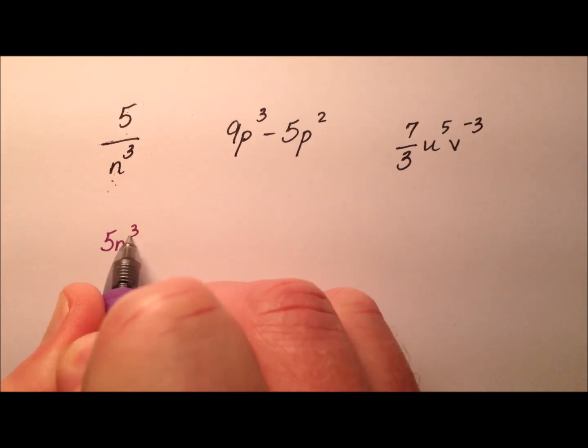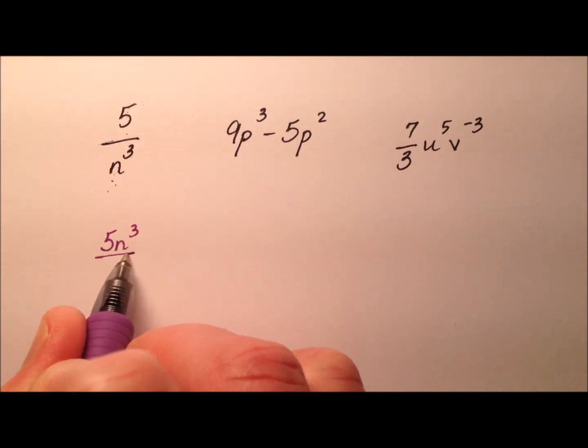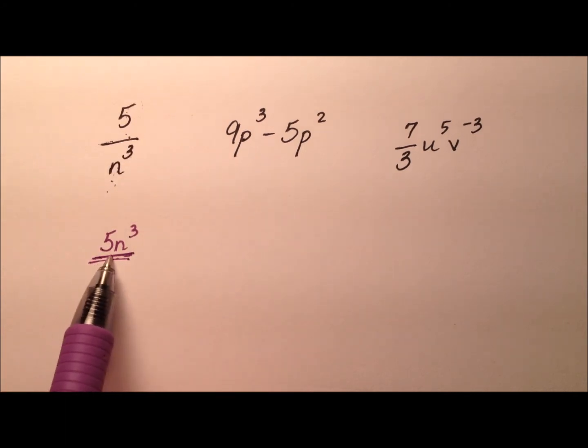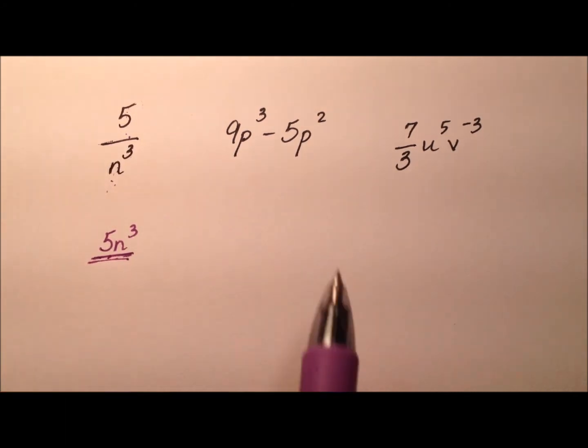If, however, we said 5 and n cubed, this would be a monomial. So this one's not because it's division. This one is because it's multiplication.